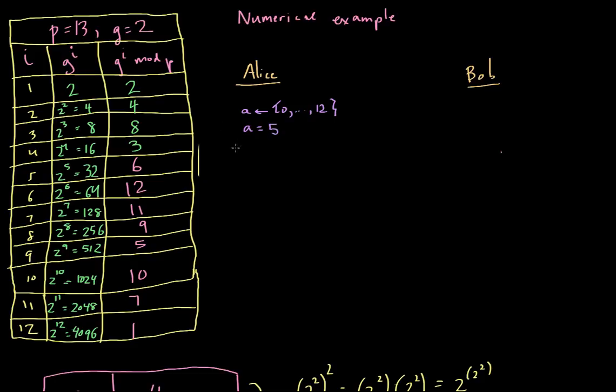So she's going to send g to the a, which we're calling uppercase A mod p, to Bob. And in this case, g to the a is basically g is going to be 2. And so she's going to be computing 2, and the a is lowercase a is 5, so 2 to the 5th mod 13.